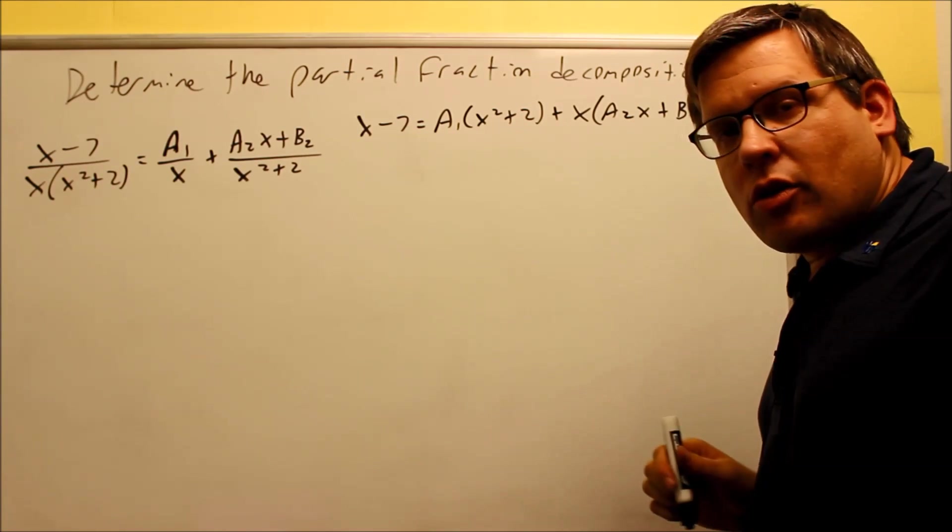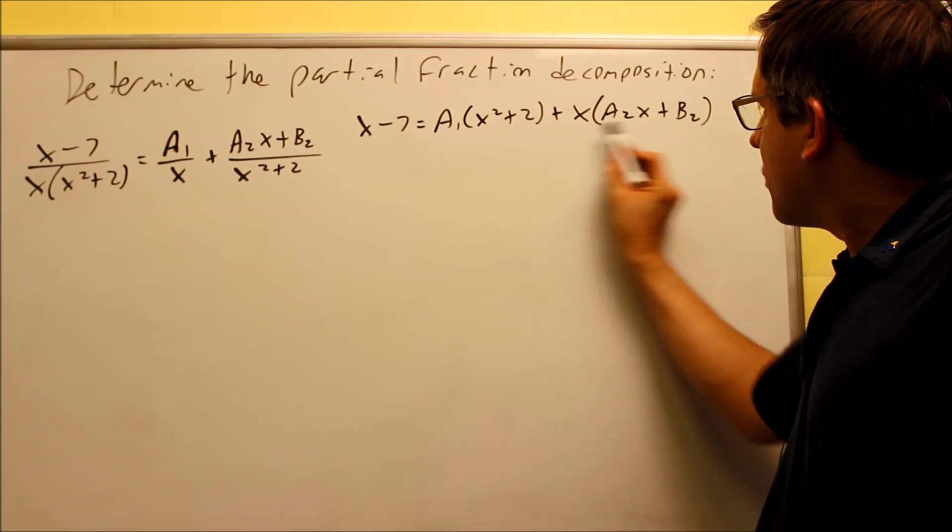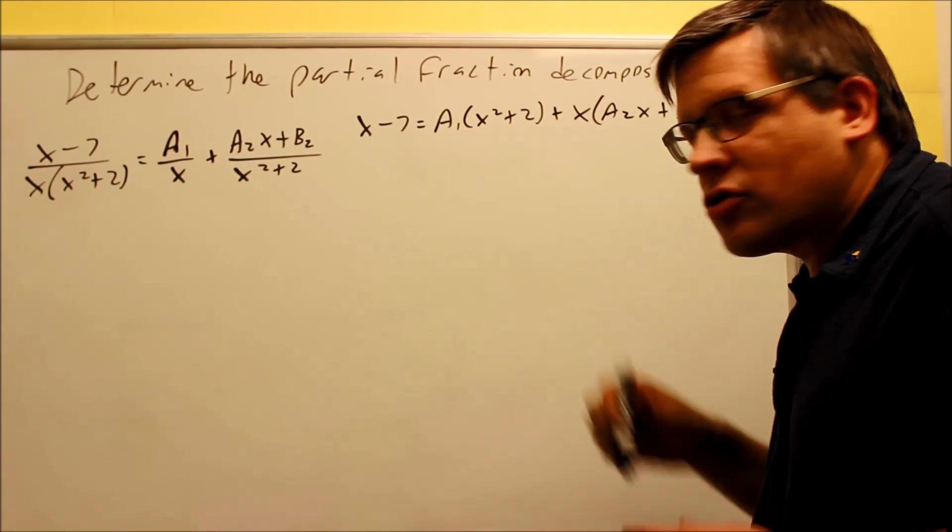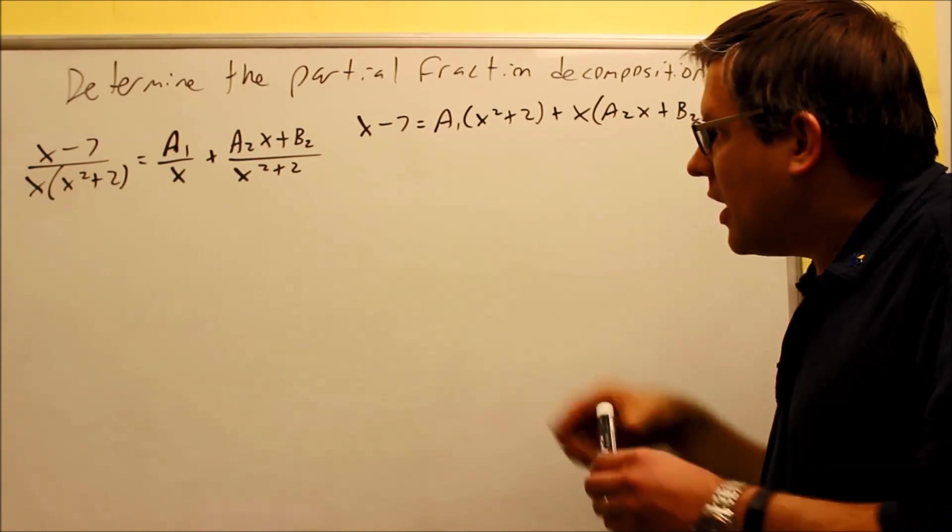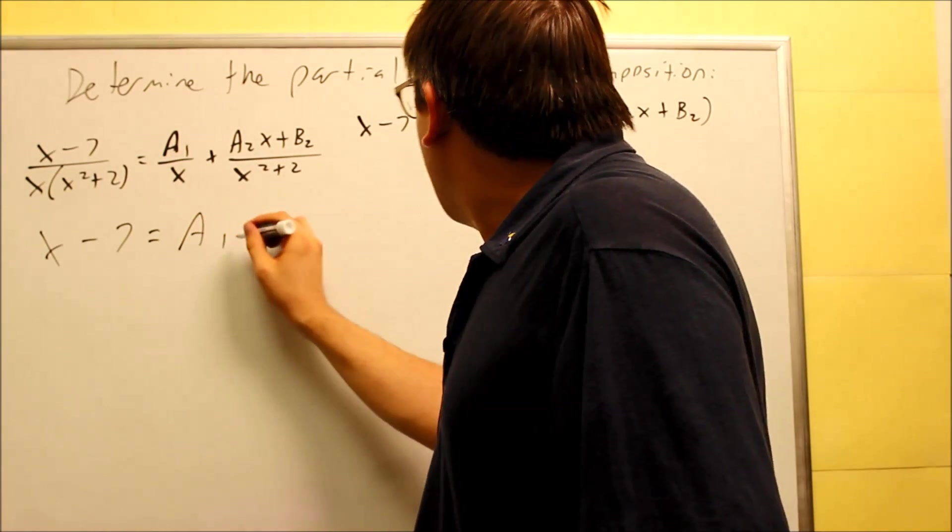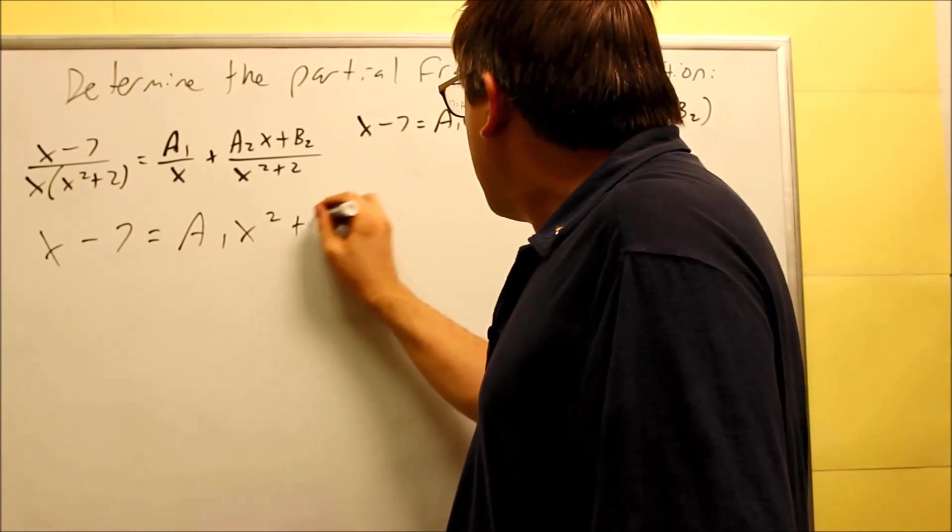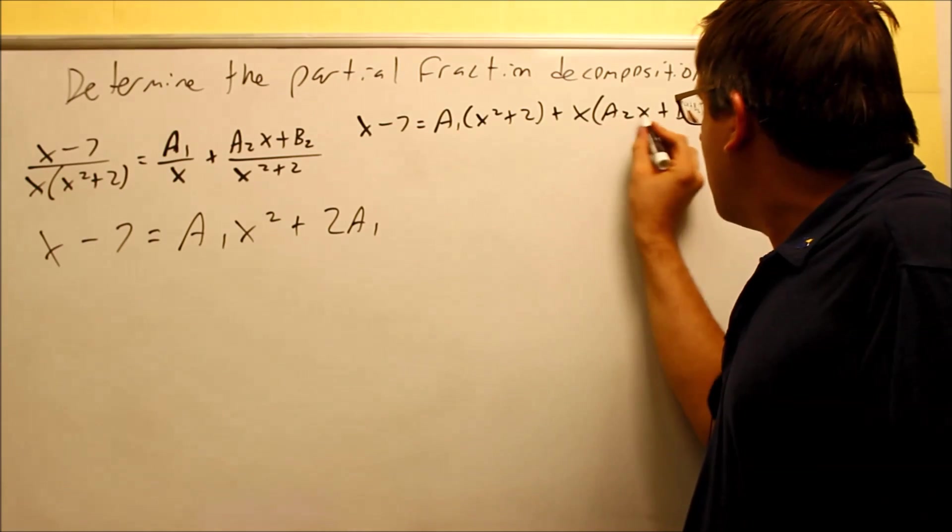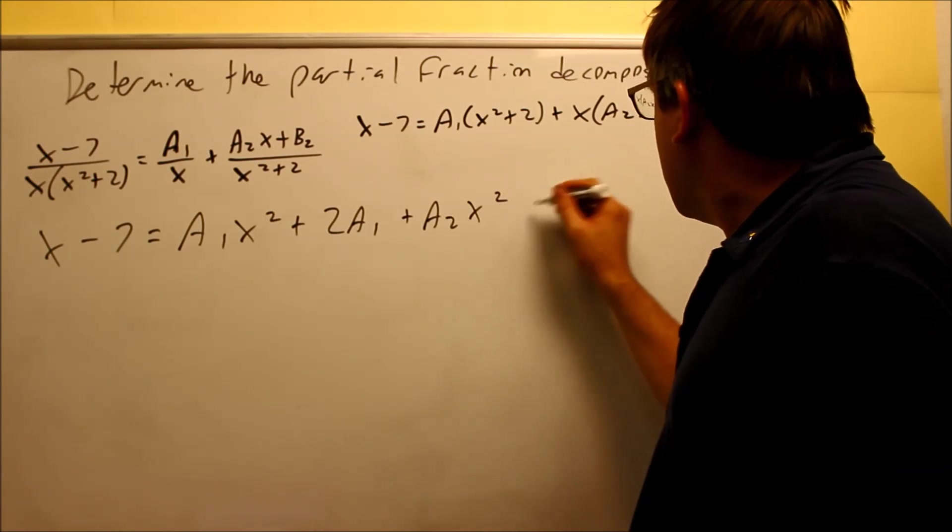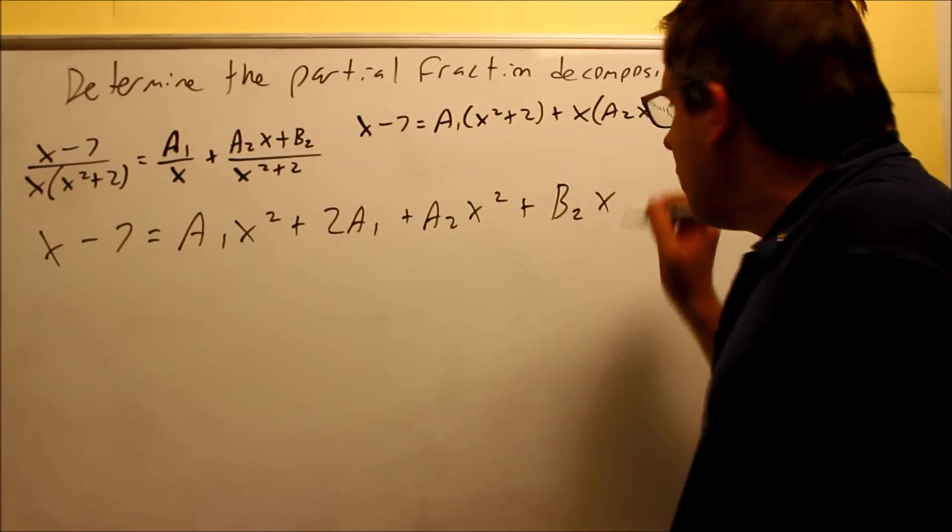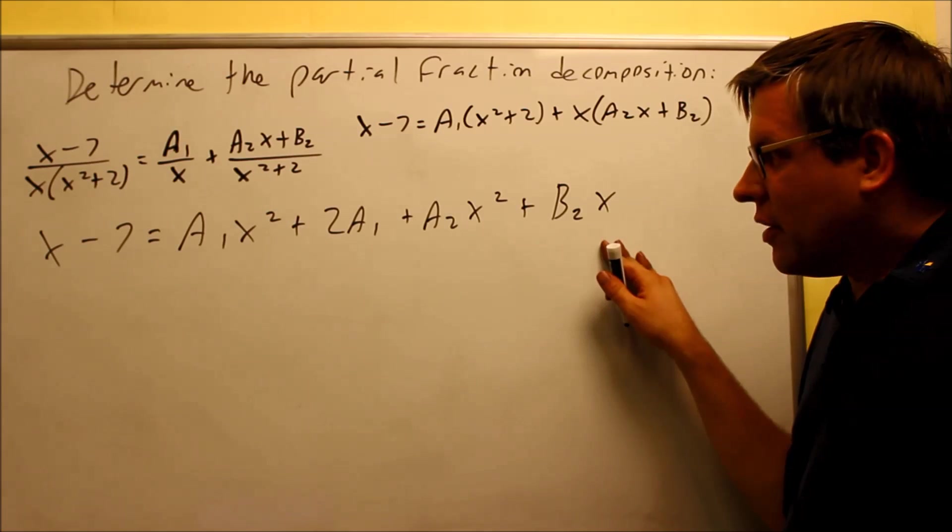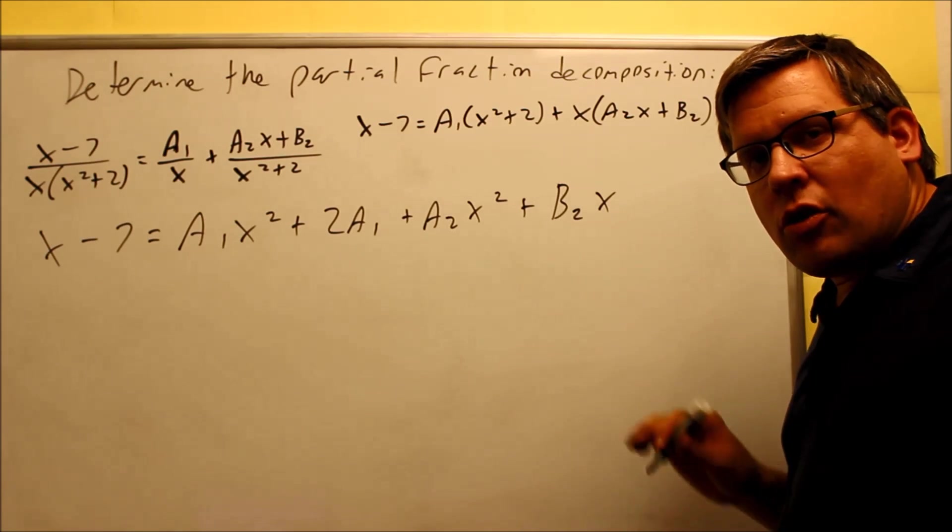Okay, so in order to equate coefficients, we have to actually multiply all this out and then set the coefficients equal to each other. So let's go ahead and expand it out here. x minus 7 is going to equal, if I multiply this out, I have a1x squared plus 2a1 and then multiply this out plus a2x squared plus b2x. So now I have all this expanded. We need to match coefficients together.